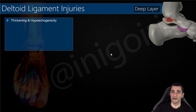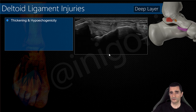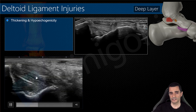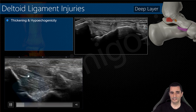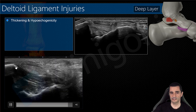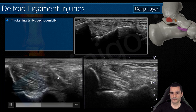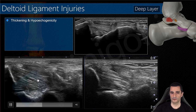Always with a ligamentary injury we will find thickening and hypoechogenicity of the ligament. The normal ligament shows a fibrillar pattern in the posterior tibiotalar ligament, with echogenicity very similar to surrounding structures. Always perform dorsiflexion of the ankle to obtain this image. In this case you can notice thickening and hypoechogenicity of the posterior tibiotalar ligament.